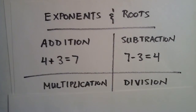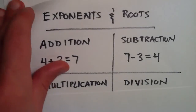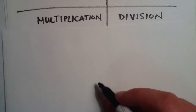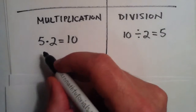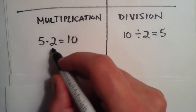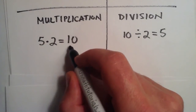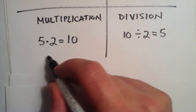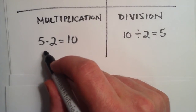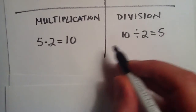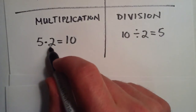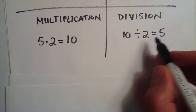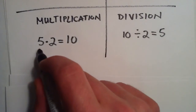Multiplication and division also have the same relationship with one another. Say we have 5 times 2, and that gets us 10. And we want to start with the 10 and work our way back to 5. We simply divide instead of multiply, and then dividing by 2 brings us back to the 5 that we started with.